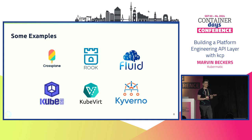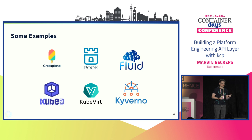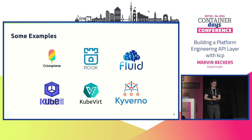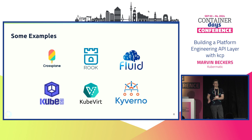Looking at just a small view from the CNCF landscape, a lot of projects have built on the Kubernetes API and extended it. Some have done so to improve container orchestration — projects like Rook or Kubevirt. But some don't care about container orchestration at all, like Crossplane, or Kyverno, which is a policy layer. The point is that the Kubernetes API's extensibility has proven to be quite awesome.